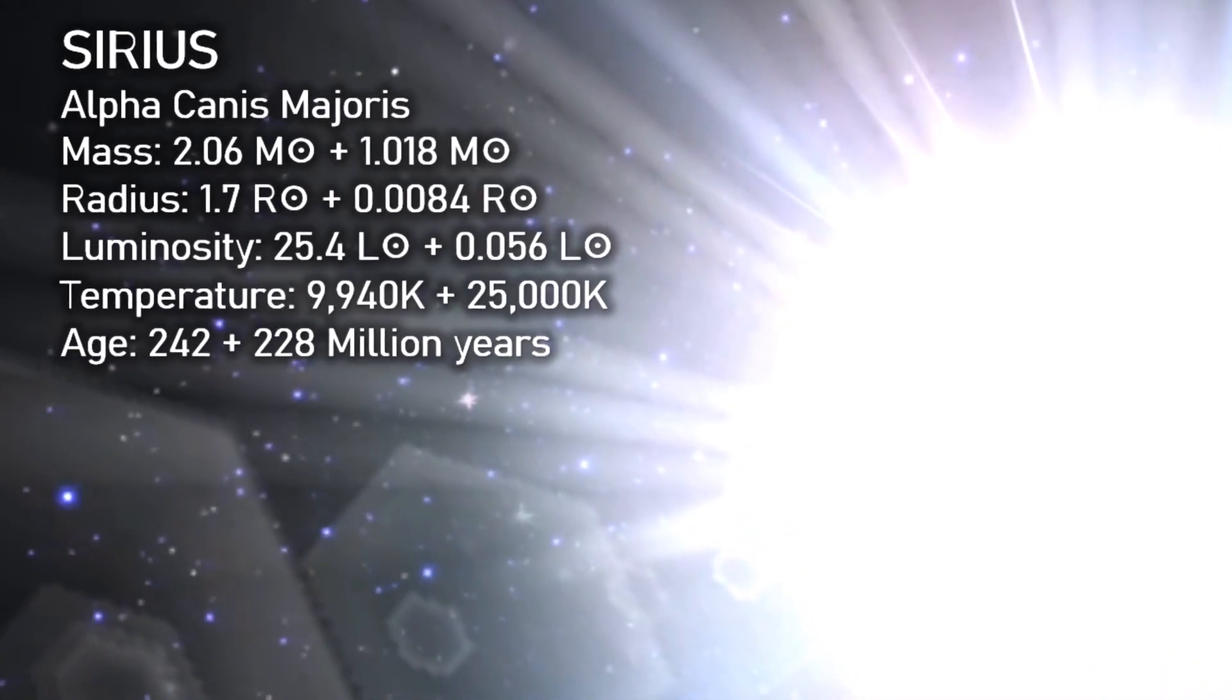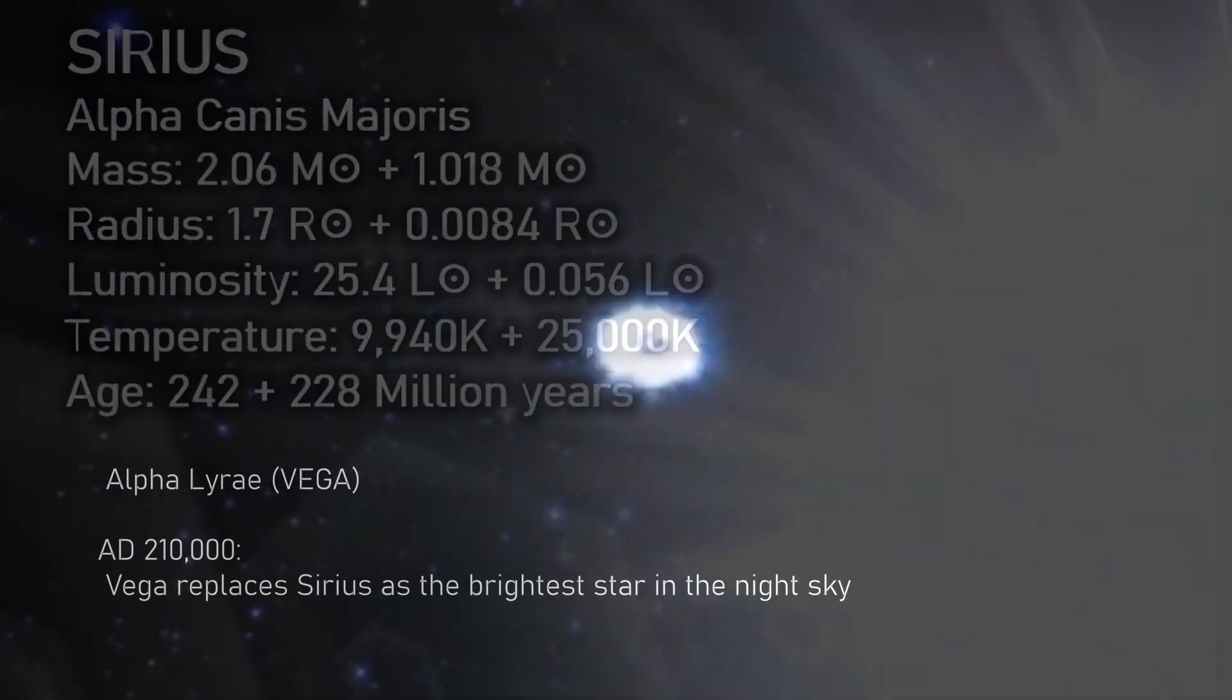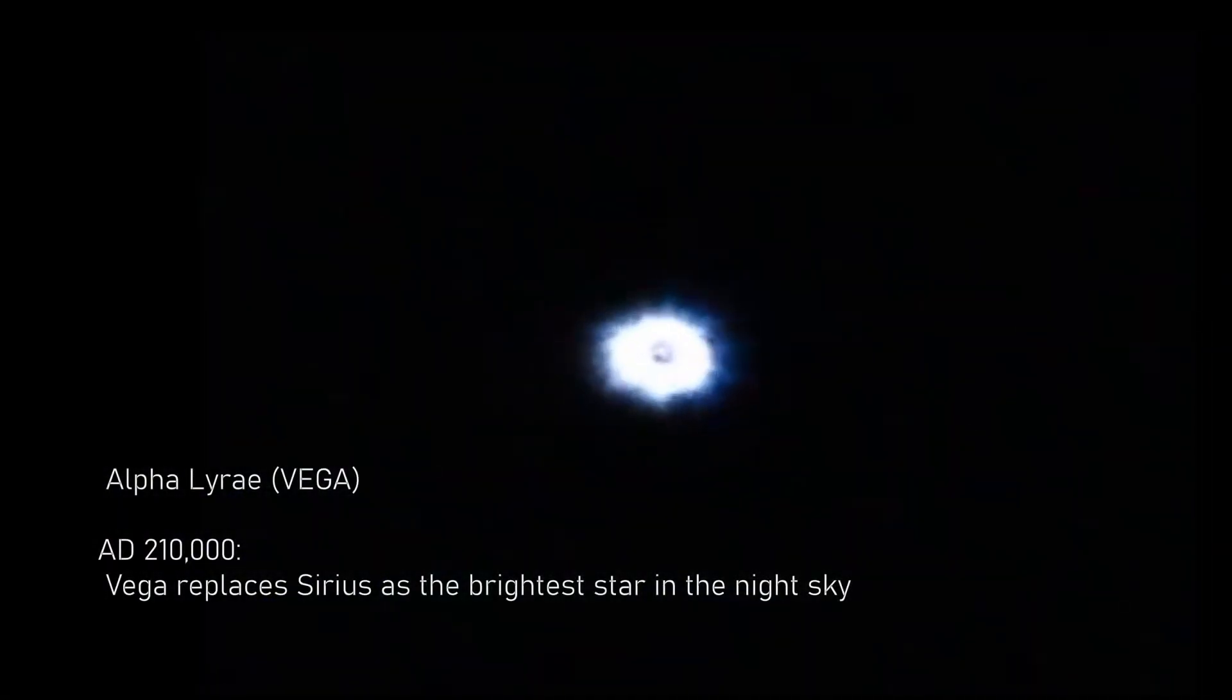In fact, around 150,000 more years to be precise, when in AD 210,000, the star of Vega, an intrinsically more luminous A-type star than Sirius, although further away, will ascend as the more dominant stellar presence.